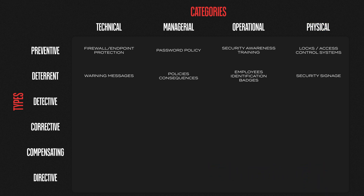If an attacker sees deterrent controls but proceeds anyway, detective controls are in place to spot the malicious activity. Technical detective controls include intrusion detection systems monitoring network traffic. A managerial example is an incident reporting procedure for employees. Operationally, security guards can conduct regular patrols. Physically, security cameras and surveillance systems can monitor and detect suspicious behavior in and around the property.